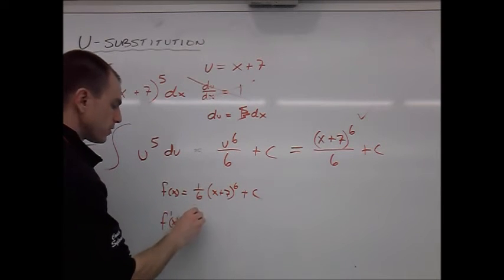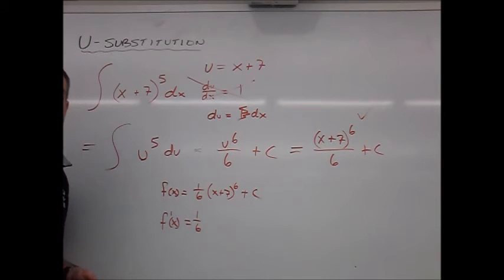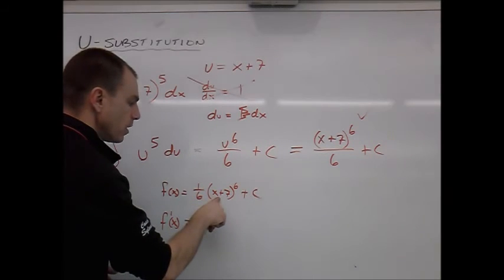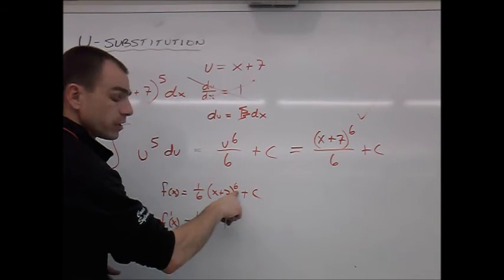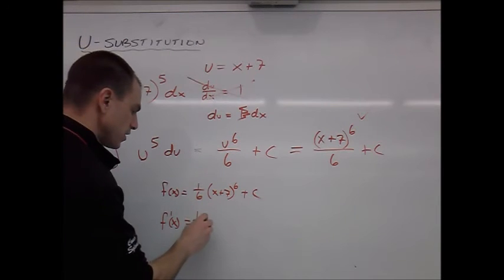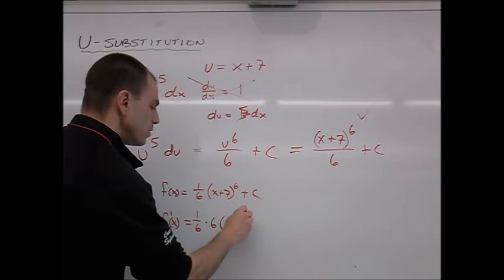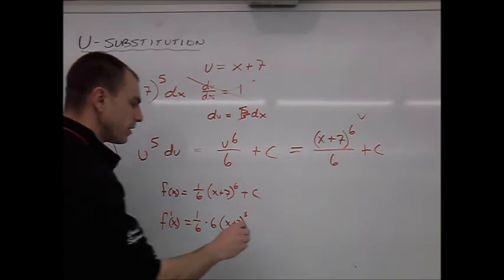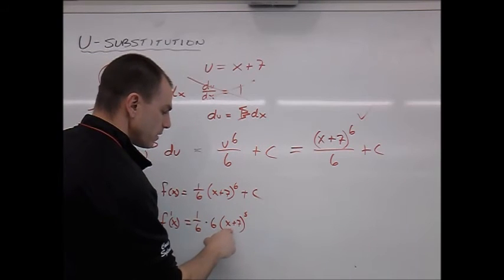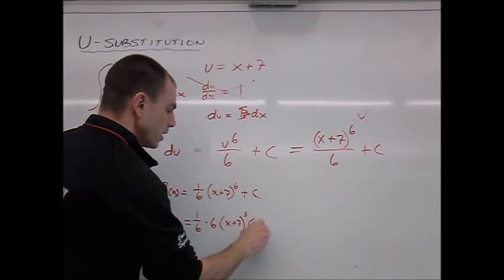1 6th is a coefficient. It moves down into our derivative. Then we have ugly to the 6th power. Chain rule. 6 goes out front, and then we write our ugly, our inner function, to the 1 less power, and then we take the derivative of the inside, and the derivative of x plus 7 is 1.